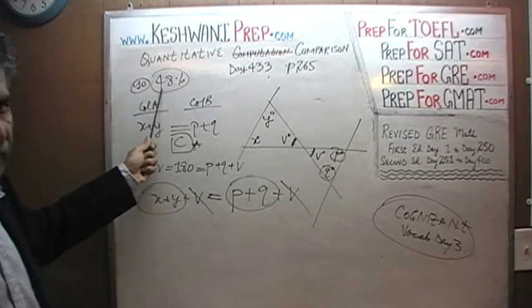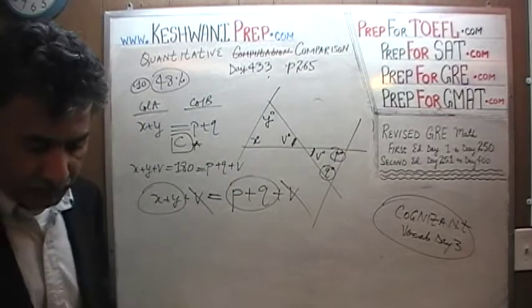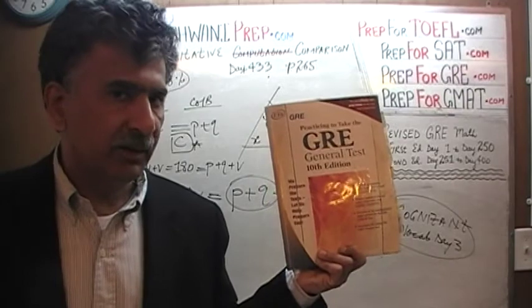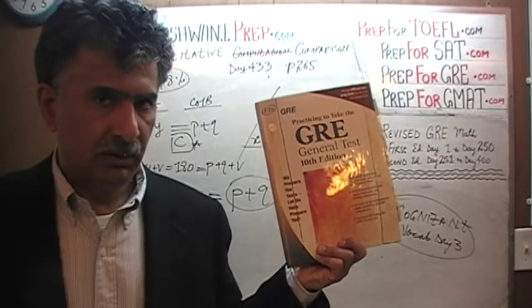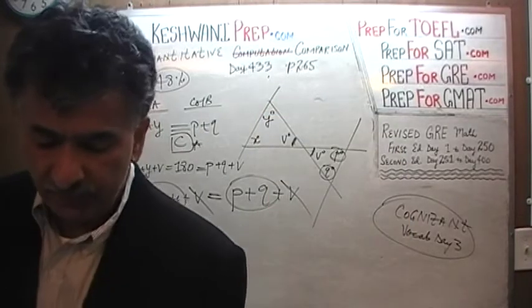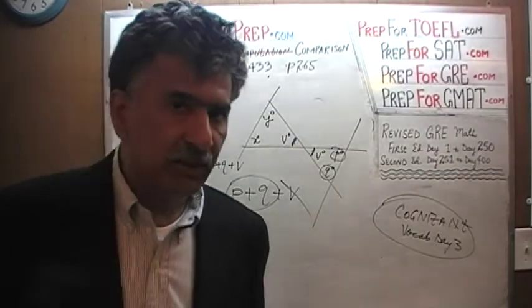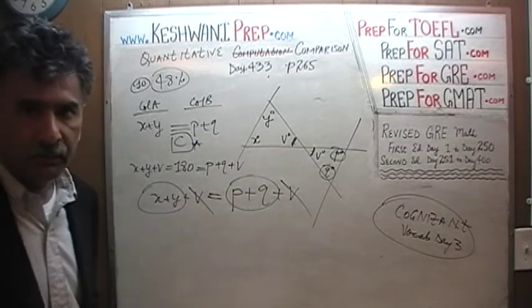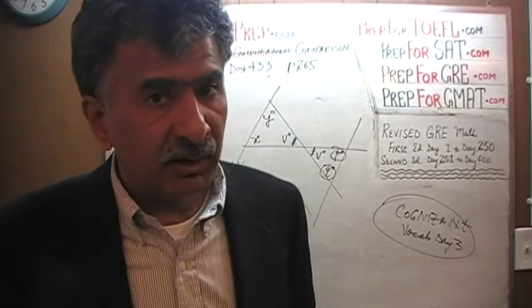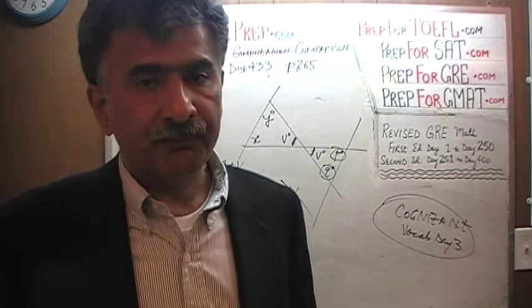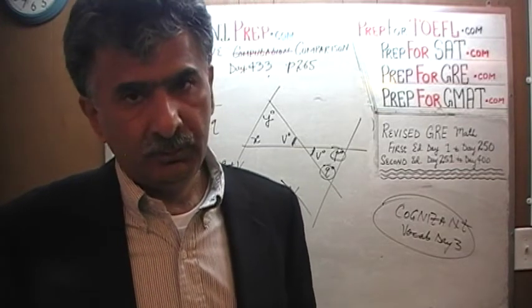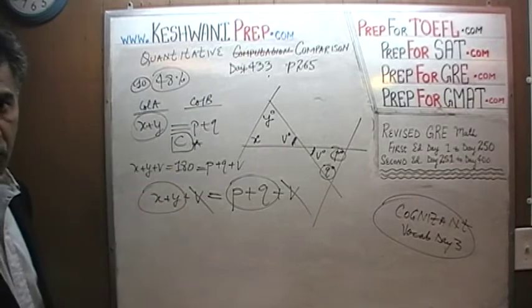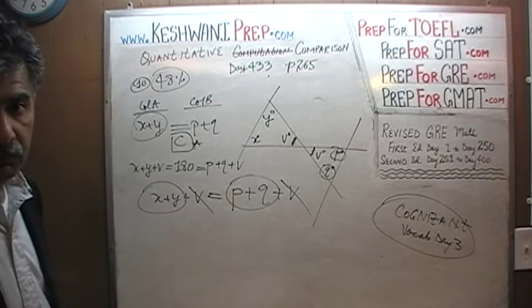The reason half the people missed this is they kept trying to figure out the individual values of X and Y — and they're right, there's no way to find those individually. But nobody is asking for X or Y alone. We only need X + Y, their sum. And that sum must equal P + Q, because once you subtract the same shared vertical angle from 180°, whatever is left must be equal. Answer is C.